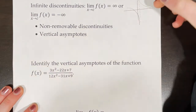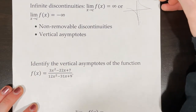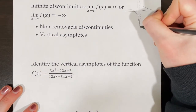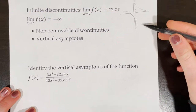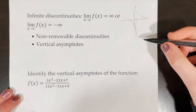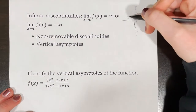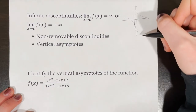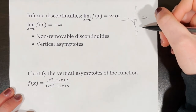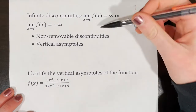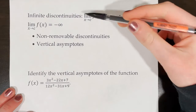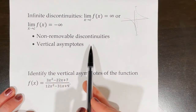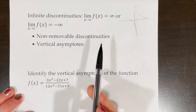From one side the function is approaching infinity, and from the other side the function is approaching negative infinity. Maybe it's approaching infinity on both sides, or negative infinity on both sides. Either way, it's an infinite discontinuity. Infinite discontinuities are non-removable discontinuities.